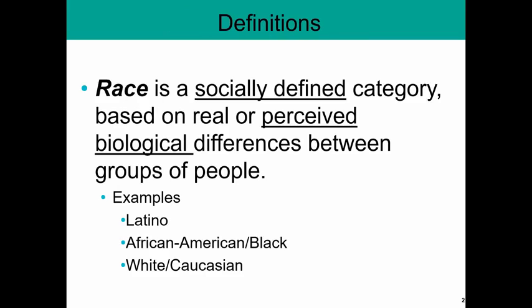Race is a socially defined category that is based on perceived or real differences between groups of people. Race is based on our physical appearance, which is based on biology, but it can vary from society to society. Different human societies have different ways of defining what races are.